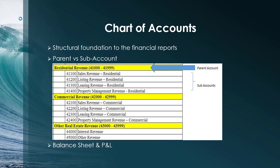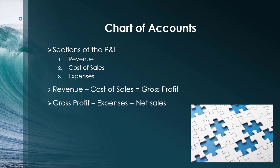We will start with going over the chart of accounts on the P&L, and then we will go over the chart of accounts on the balance sheet. Finally, we will go into QuickBooks Online and demonstrate how to upload and set them up. Starting with the profit and loss — there are three sections: the first is revenue, the second is cost of sales, and the third is expenses.